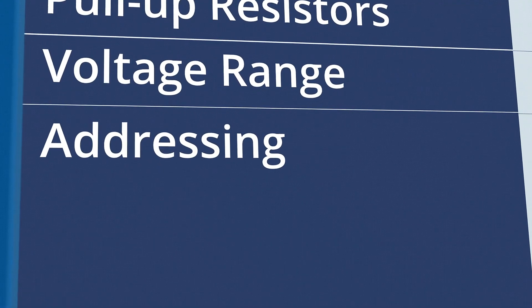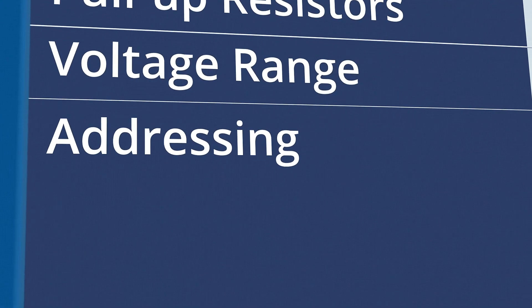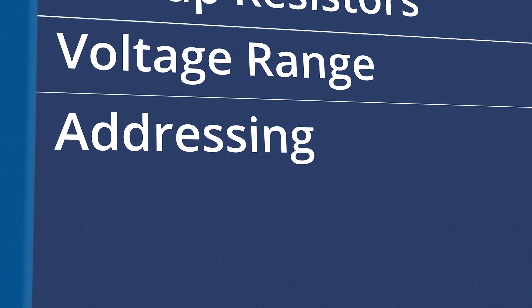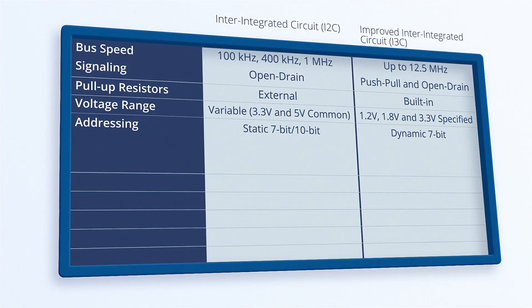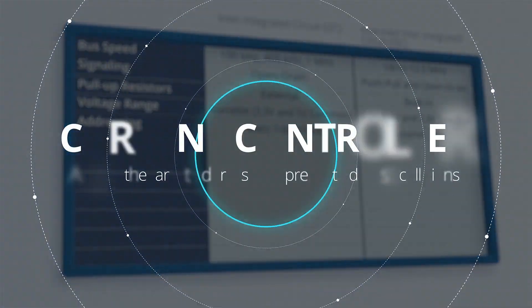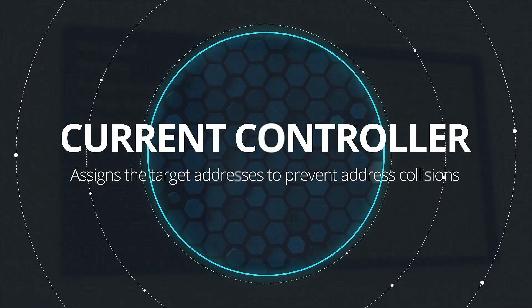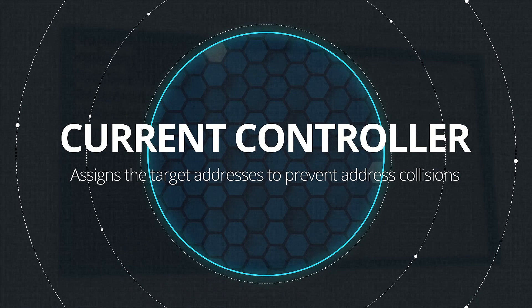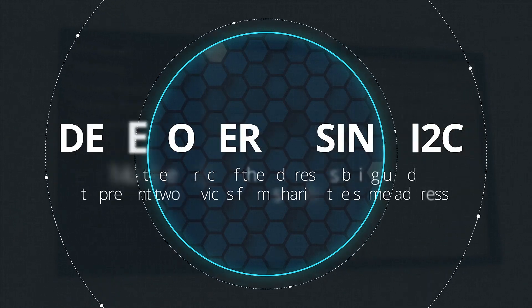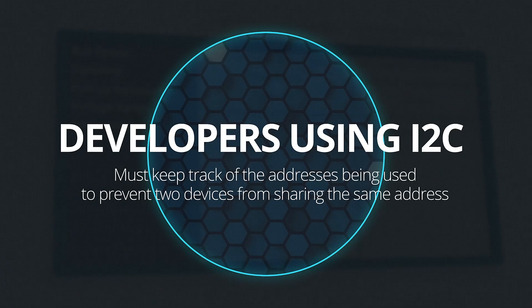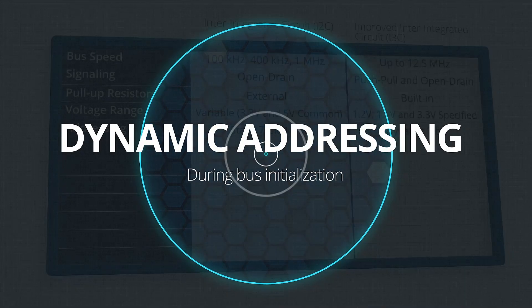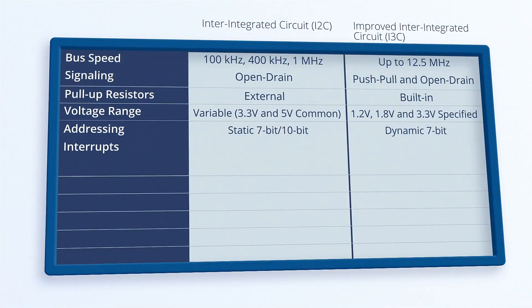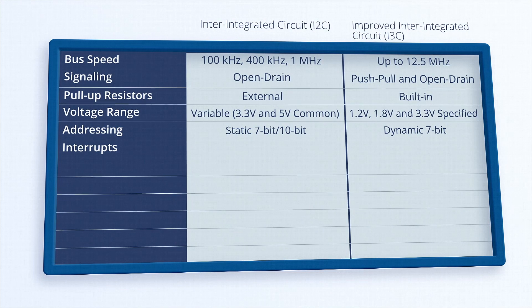Next, let's look at how addressing works in i3C. i2C can support 7-bit and 10-bit addressing of target devices, whereas i3C only supports 7-bit addressing. However, i3C uses dynamic addressing, which means that the current controller assigns the target addresses to prevent address collisions. Developers using i2C must keep track of addresses manually to prevent conflicts. Dynamic addressing of targets happens during bus initialization, and the assigned address plays a role in prioritization during arbitration or in-band interrupts.